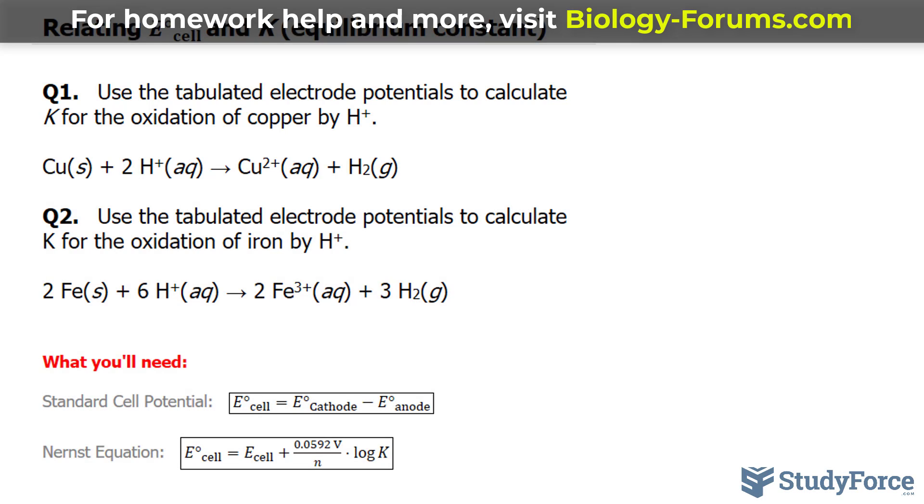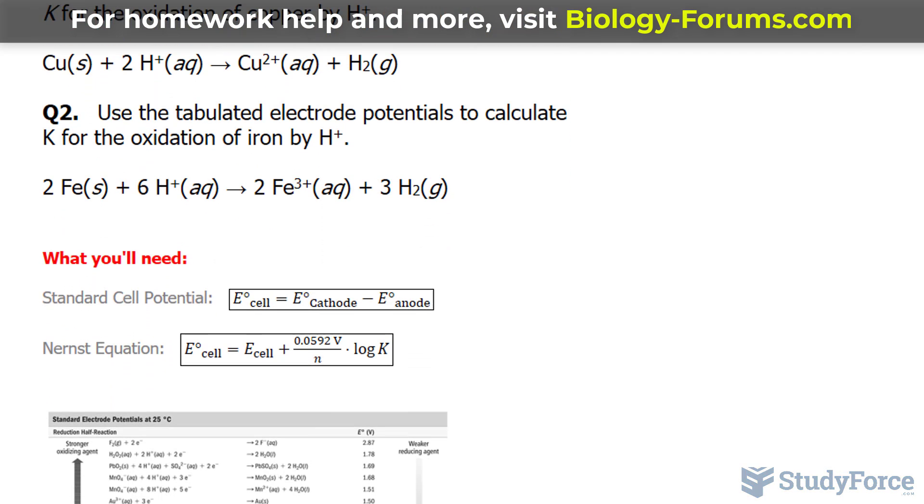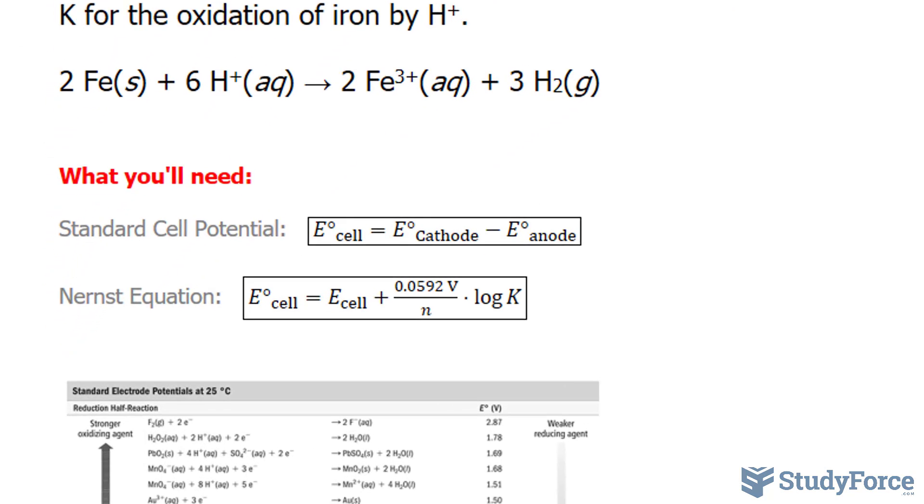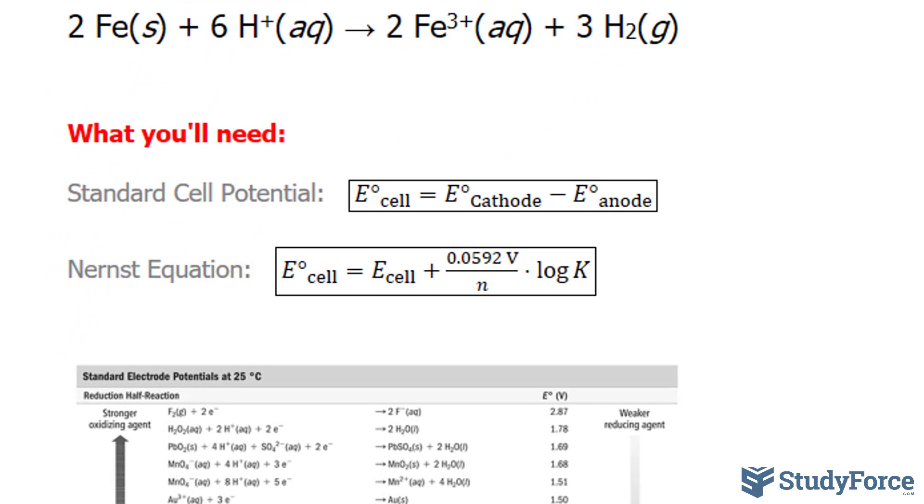the relationship between E cell and the equilibrium constant can be found using the Nernst equation. Take a look at this formula shown here. The standard cell potential is equal to the cell potential at non-standard conditions—for us that's 0—plus this factor divided by N times log K.